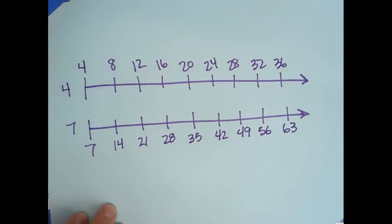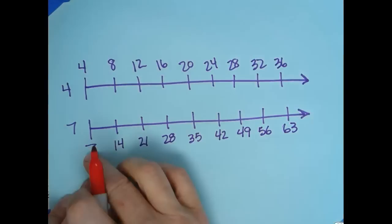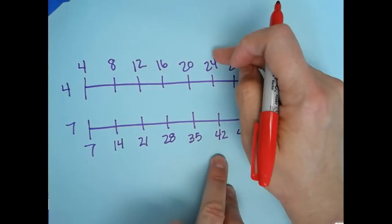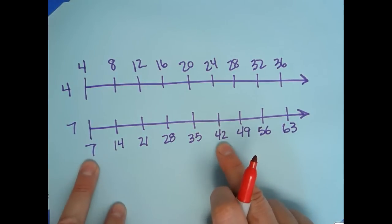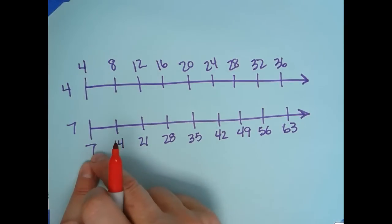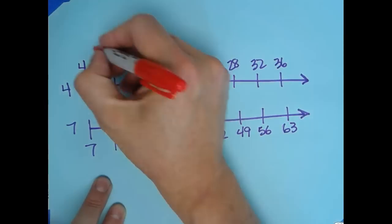If we're looking at any specific equivalent ratio of four to seven, we can just go right here and say that 24 to 42 would be an equivalent ratio to four to seven.